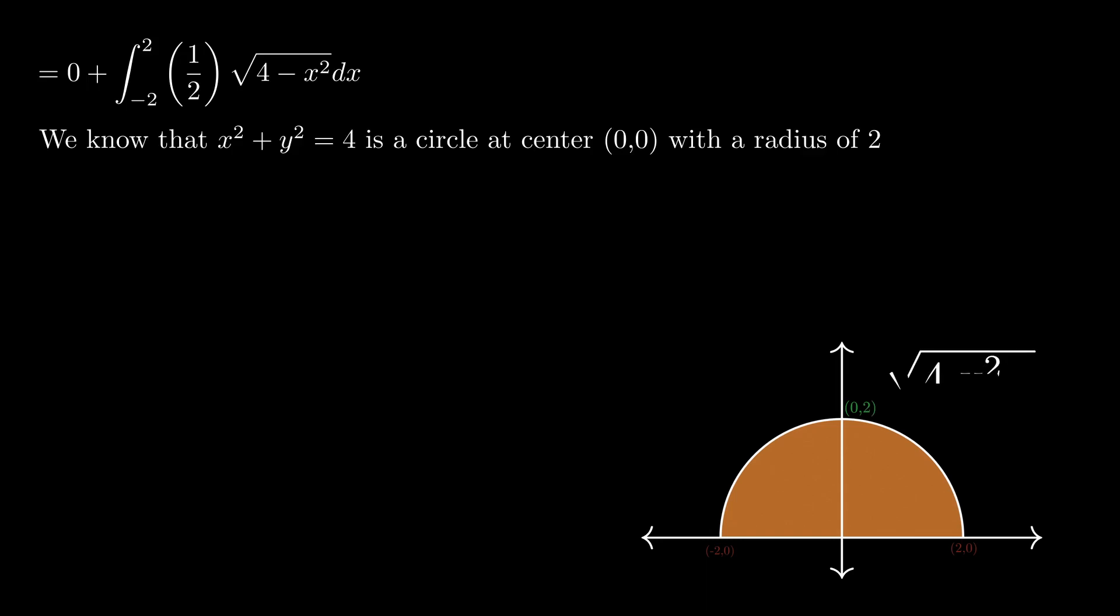The integral represents half the area of a semicircle. The area of a semicircle is (1/2)πr², and the half is already in our equation. So we get (1/2)(1/2)π(2²).